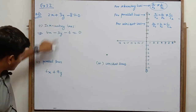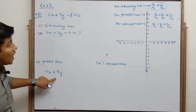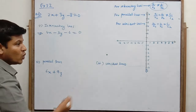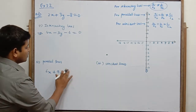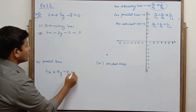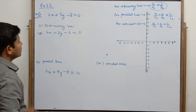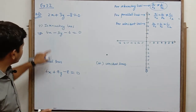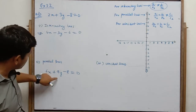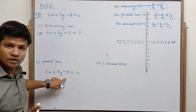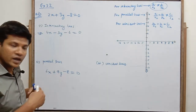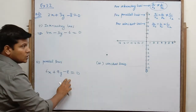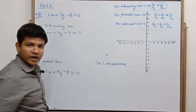यह भी 1/3, यह भी 1/3. अभी c1/c2 equal नहीं चाहिए। c1 = −8 है, तो इसको triple नहीं करेंगे। तो यहाँ पर minus 8 लिखें, तो यह plus 1 हो जाएगा। तो ratios: a1/a2 = 1/3, b1/b2 = 1/3, c1/c2 = 1. So a1/a2 = b1/b2 but not equal to c1/c2 — तो यह parallel lines बनाएंगे।